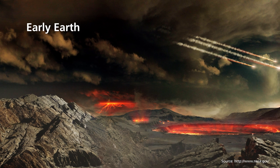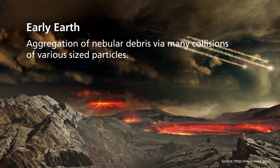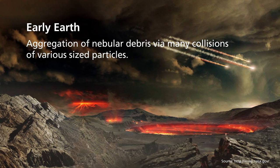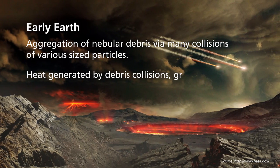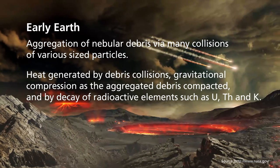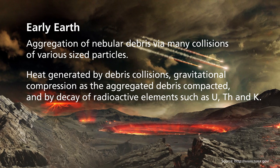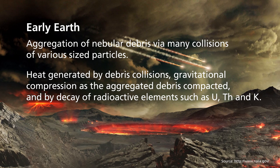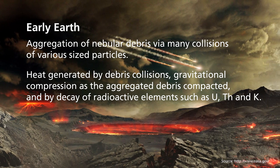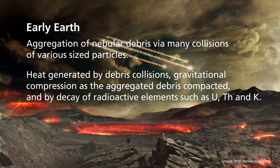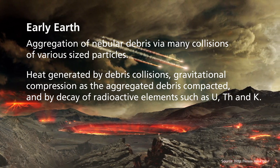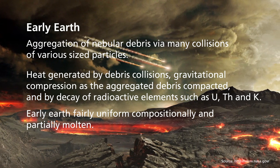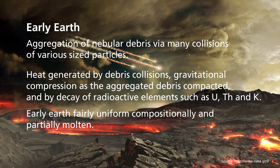The early Earth was an aggregation of nebular debris from many collisions of various sized particles. The heat generated by debris collisions, through gravitational compression and by decay of radioactive elements such as uranium, thallium, and potassium, made early Earth fairly uniform compositionally and also partially molten.